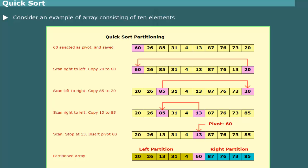Observe that the elements 20, 26, 13, 31 to the left of pivot 60 are smaller than the pivot, and the elements 87, 76, 73, 85 to the right of the pivot are larger than the pivot. We can apply the same procedure to the left and right partition until the array is sorted. Please click the button to watch quick sort visualization.